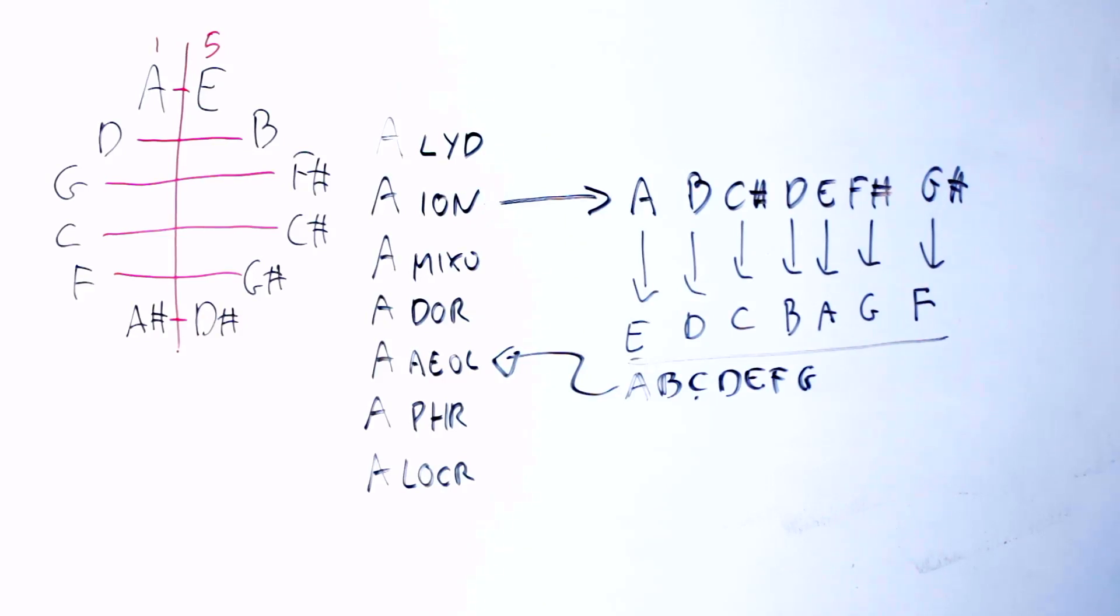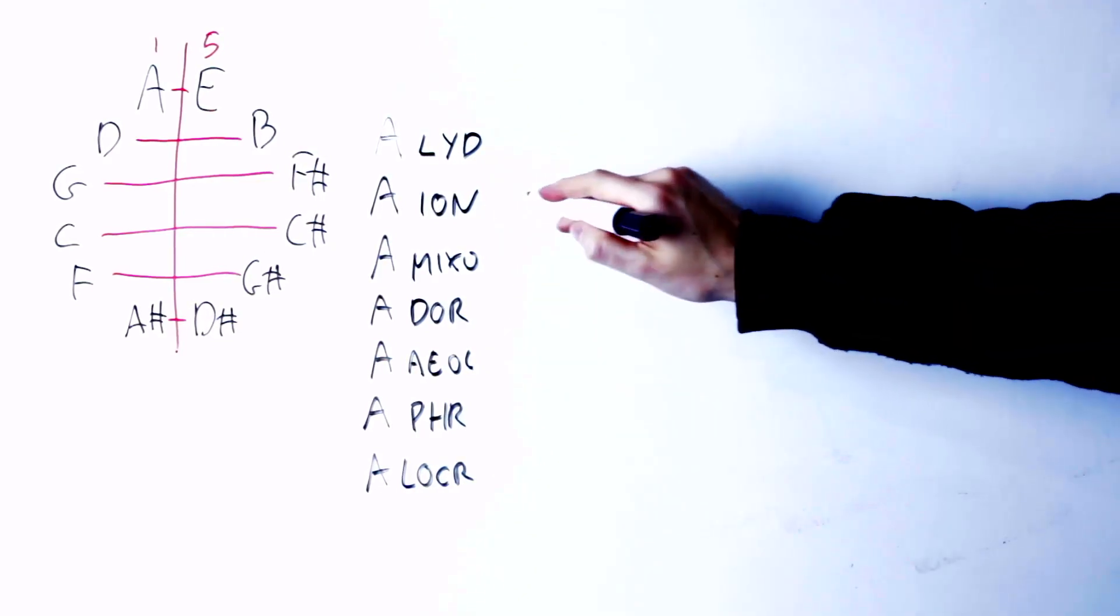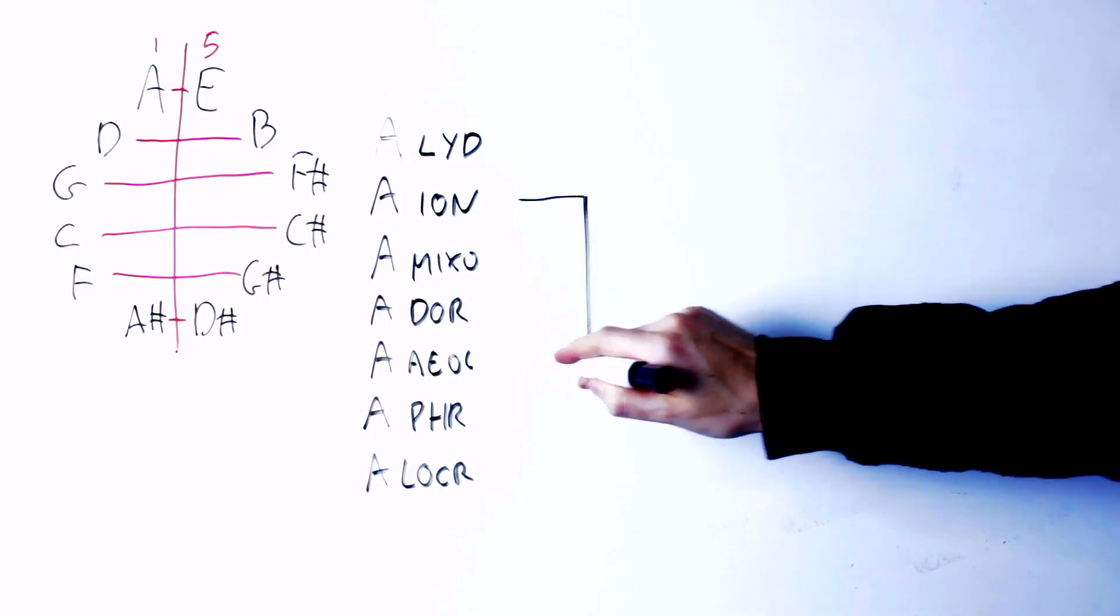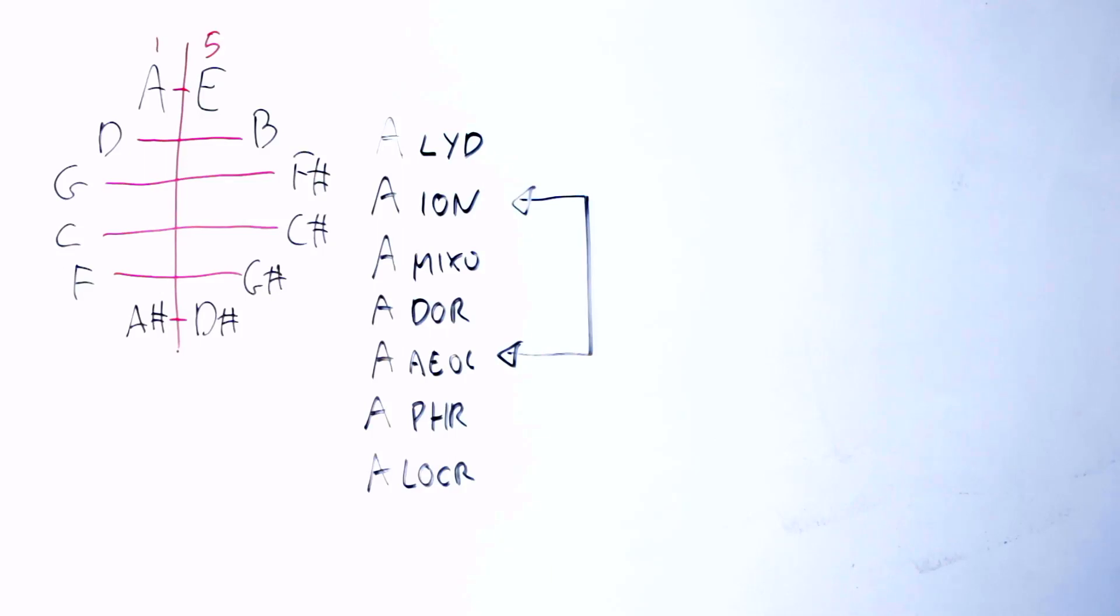And of course, if I take the A Aeolian scale and I flip everything again through negative harmony, I get the A Ionian scale back. So the A Ionian and the A Aeolian scale are conjugated—they are connected by negative harmony, one becomes the other, they are their mirror image of each other under negative harmony.